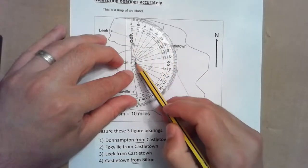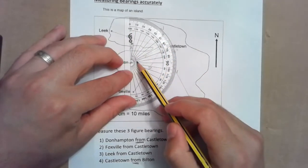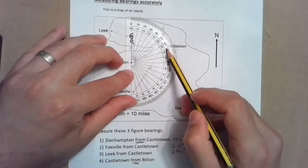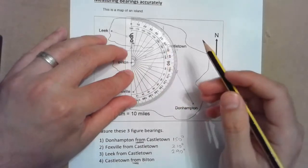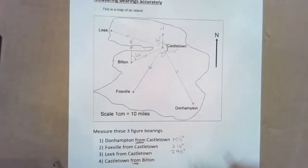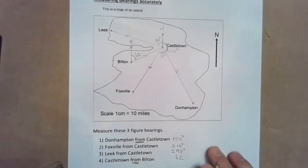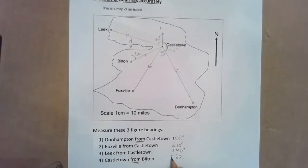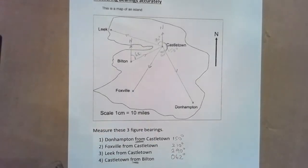From Bilton, measuring north clockwise, I want this turn here which is about 62 degrees. Remember bearings have to be three figures, so that has to be 062 degrees. At this point pause the video and have a go at question 1 on exercise 12f, and come back when you're ready.